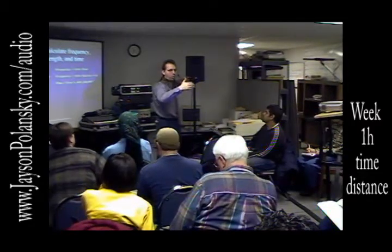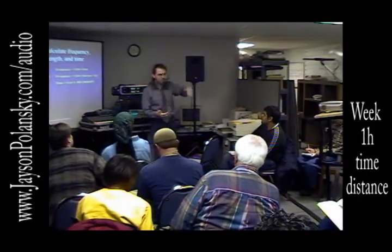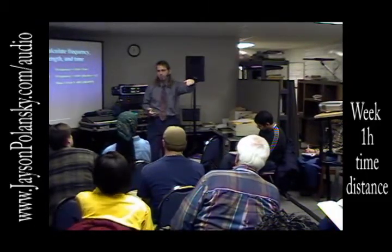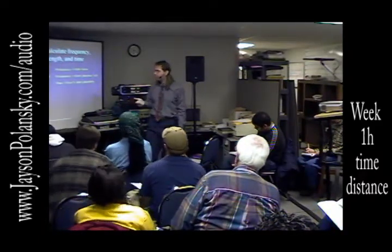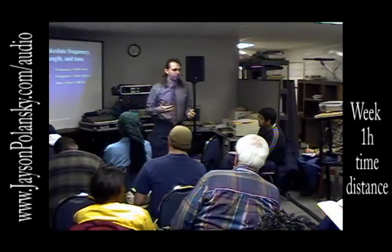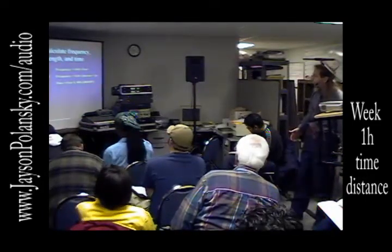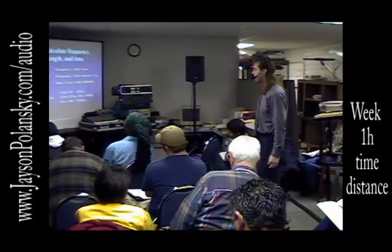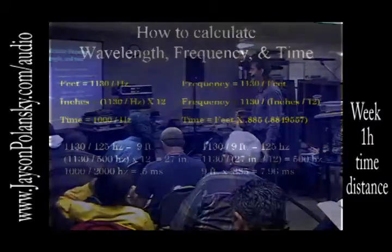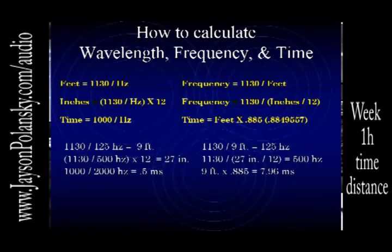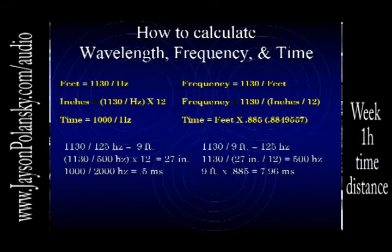If we go down to 100 hertz — a 10-foot-long wave — it takes 10 milliseconds for that wave to develop, because time, frequency, and distance all play into each other. I punched in some calculations: 125 hertz has an approximate wavelength of nine feet; 500 hertz has an approximate wavelength of 27 inches; and 2,000 hertz — 2k — I also figured out the time for that.